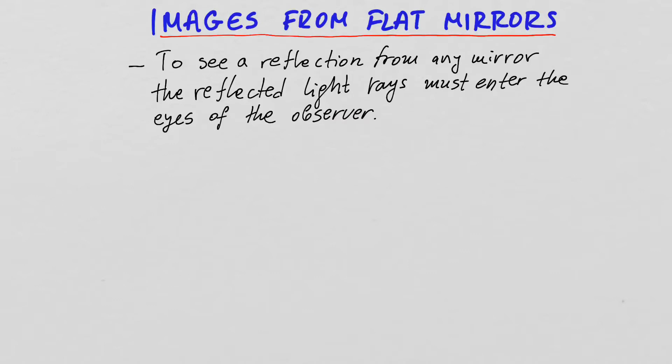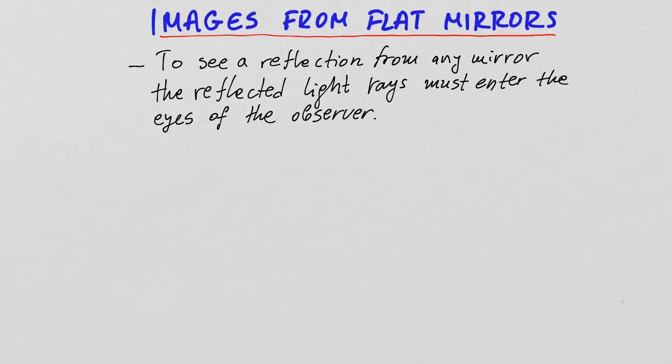We discussed that already when we talked about the law of reflection, and we said that in order to see an object, we must be in a position so that the reflected light from that object enters our eyes. Here is a schematic representing how reflections are formed of an image, I'm sorry, of an object.